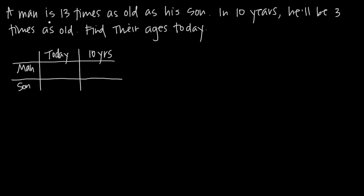We know the man is currently 13 times as old as his son. To make it easier, let's use m for the man's age today and s for the son's age today. Then for the man's age in 10 years we'll use 10 plus m, and for the son's age in 10 years we'll use 10 plus s.